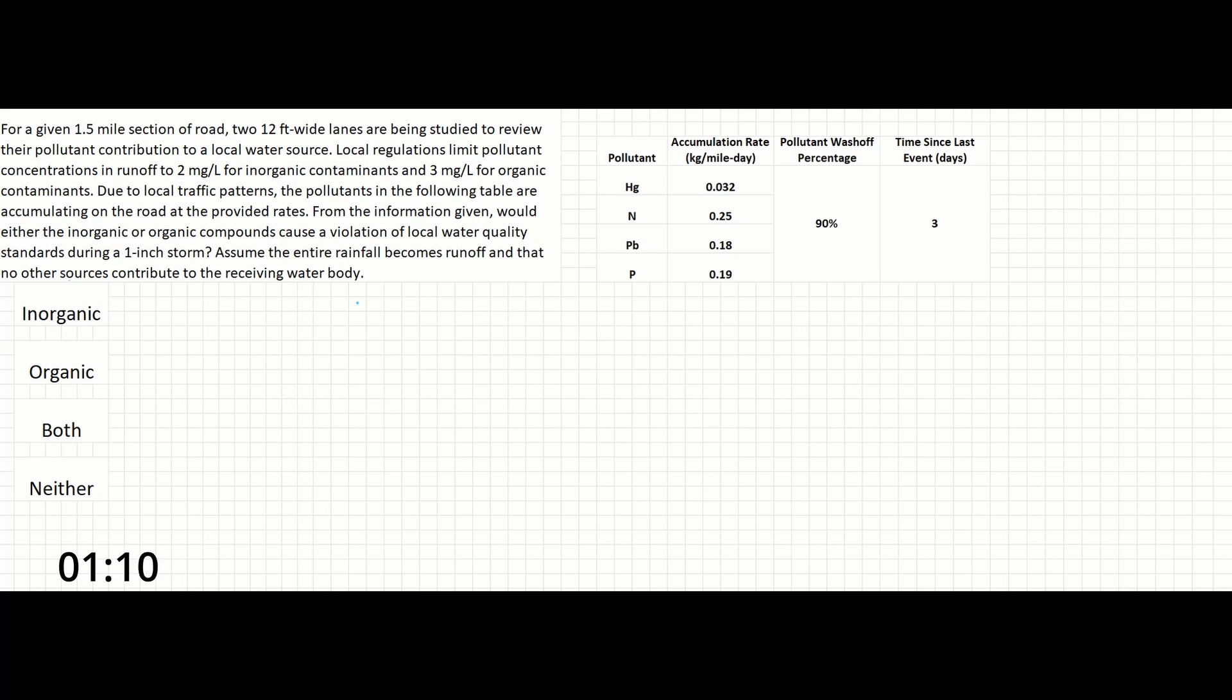First, let's note that Hg, mercury, and Pb, lead, are our inorganic contaminants.